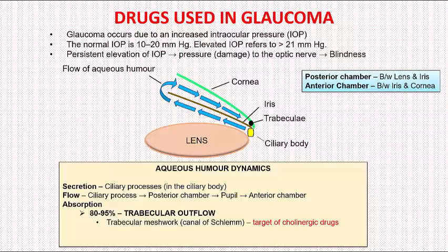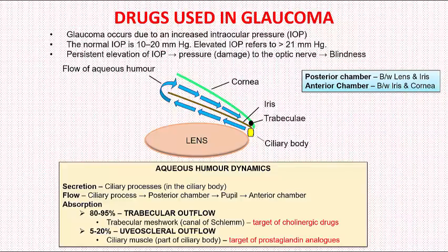The second pathway is the uveoscleral outflow, which occurs via the ciliary muscle. This accounts for 5 to 20 percent of aqueous humor drainage, and prostaglandin analogs specifically target this pathway. Now we come to the drugs used in glaucoma.